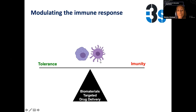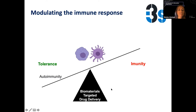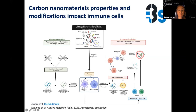Sometimes we want the response more towards immunity — for example, if we want to fight cancer or pathogens, we want to promote inflammation and an immune response. Or we may want to promote tolerance when we need to fight autoimmunity.